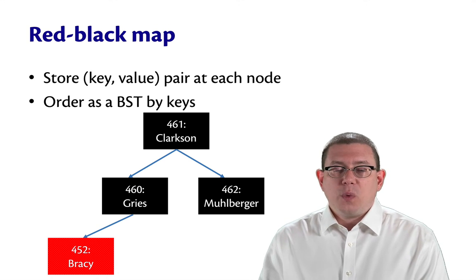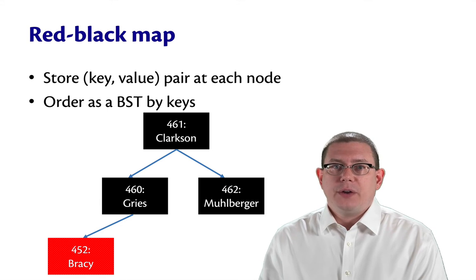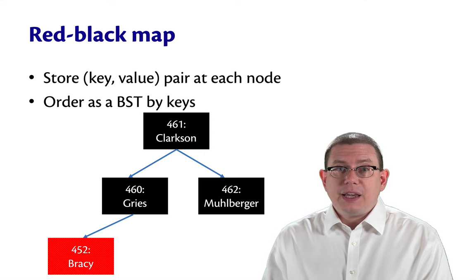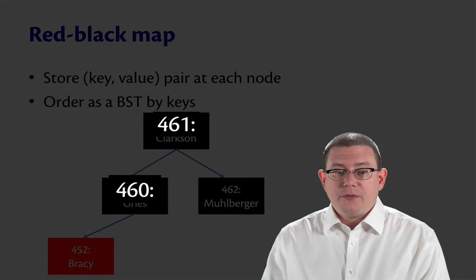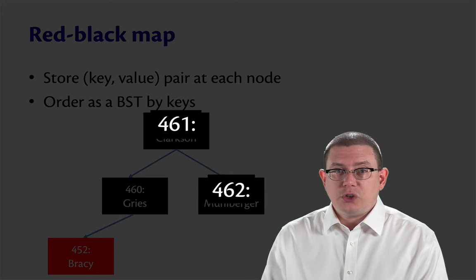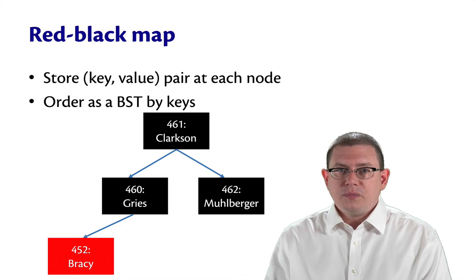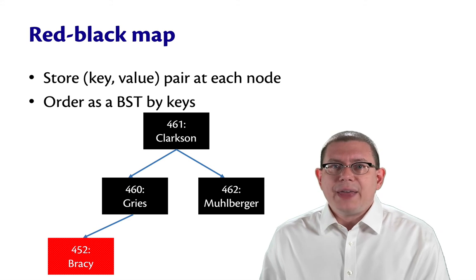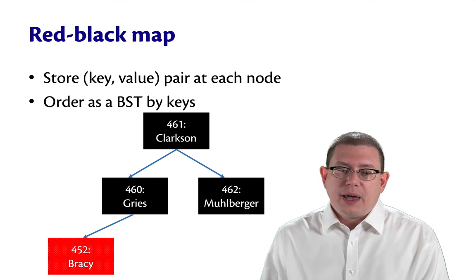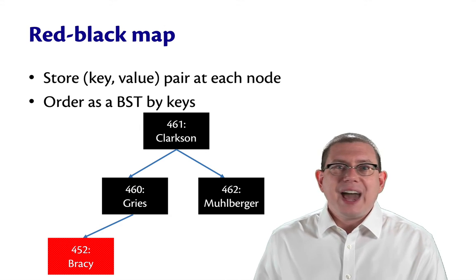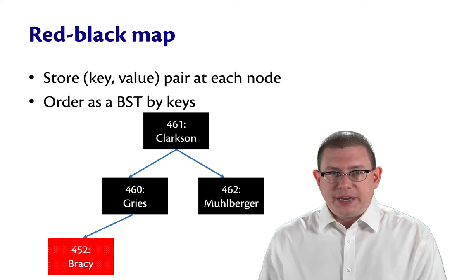The key is what we use as the ordering for the binary search tree. So if our keys are integers, then the BST is ordered by those integers — you would have 460 to the left of 461, and 462 to the right of 461. The values are irrelevant to the BST invariant; they're just a little extra information that's carried along in each node.